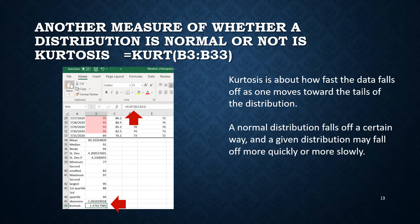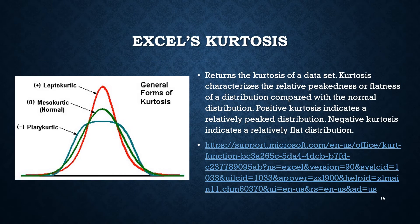In Excel, in cell B46, we enter the formula for kurtosis: equals KURT (K-U-R-T), open parenthesis, data range B3:B33, close parenthesis, and Enter. This is again a measure of whether we are normal or not. Excel uses a definition where kurtosis is zero for the normal distribution. A positive kurtosis means the distribution is more sharply peaked in the center, whereas a negative kurtosis means it is more spread out — always compared to the normal (Gaussian, bell curve) distribution.